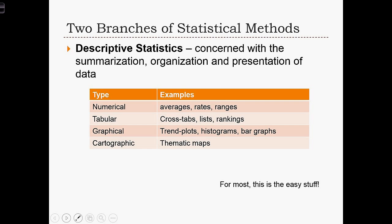Another method in descriptive statistics is tabular methods. Tabular means tables. We are trying to make tables like cross-tabs, lists, and rankings to describe a large set of numbers. In addition to tables, we might try to draw a picture. We might try to graph the data using trend plots, histograms, or bar graphs to describe or organize it.